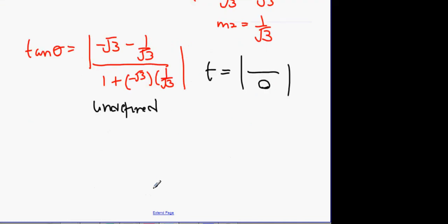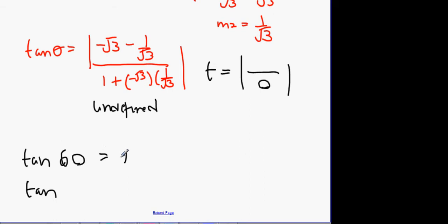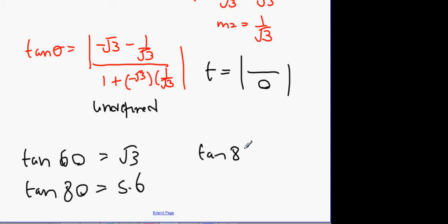There's one value of tan that gives you undefined. For instance, tan 60 gives root 3. Tan 80 gives about 5.6. Tan 89 is a very large number, and tan 89.9 and tan 89.99 keep getting bigger and bigger.